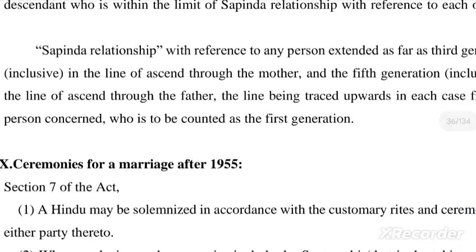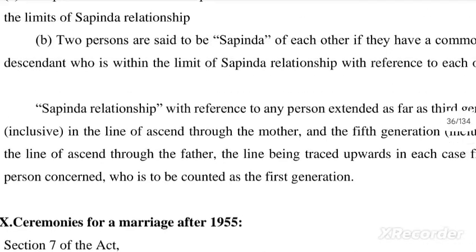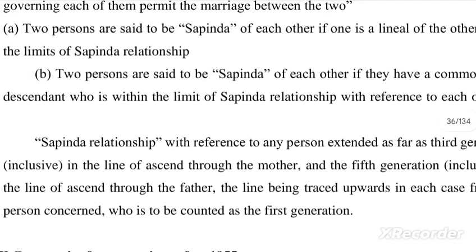Sapinda relationship with reference to any person extends as far as the third generation in the line of ascent through the mother, and the fifth generation in the line of ascent through the father, the line being traced upwards from the person concerned, who is counted as the first generation.